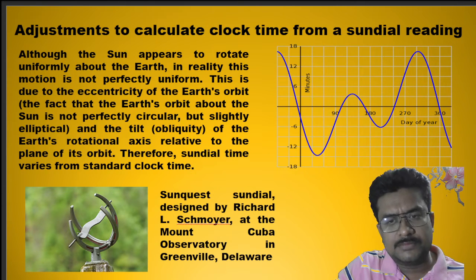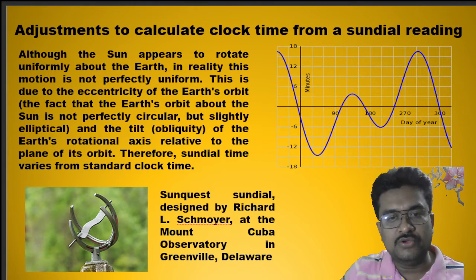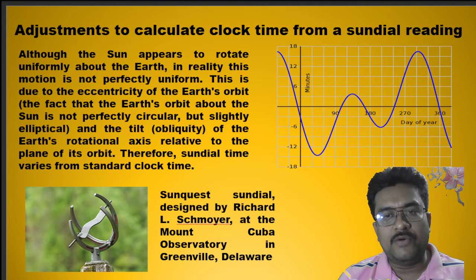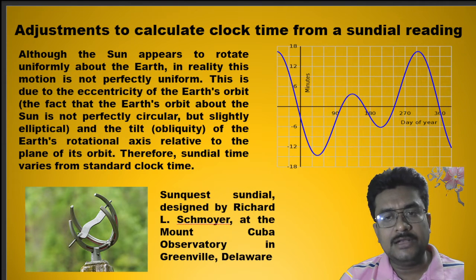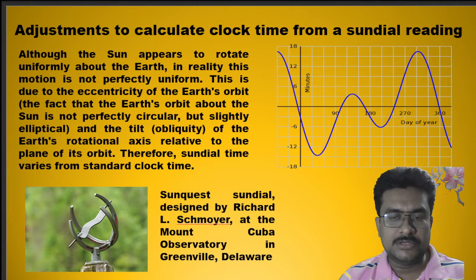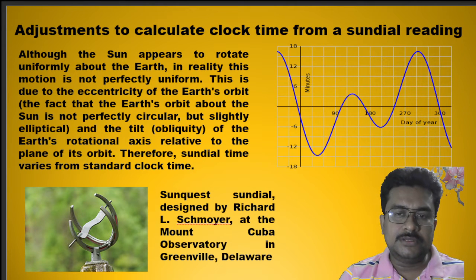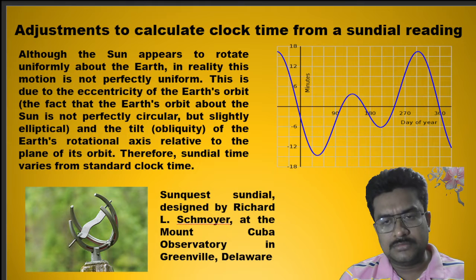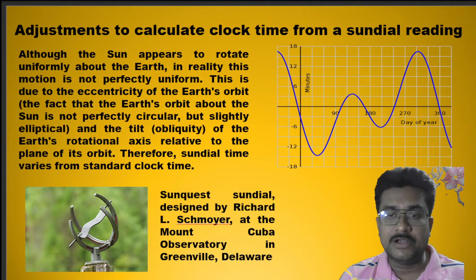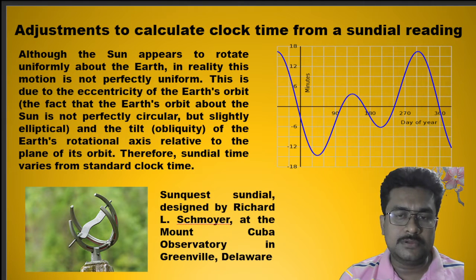To correct this sundial timekeeping device, the analemmatic sundial was designed by Richard L. Sommir at the Mount Cuba Observatory in Green Valley, Delaware. He designed a sundial entirely based on, and motivated by, the analemma — the motion of the Sun in the sky. It casts the shadow using a gnomon onto an equatorial plane. This type of sundial is adjustable for different longitudes and latitudes, and so it automatically corrects for the equation of time.